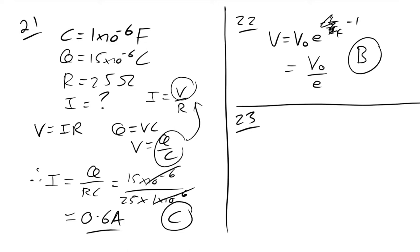Question 23: a coil with current in a magnetic field. Option A says no magnetic forces on SP and QR — that's false, one goes up and the other down out of the page. Option B says no magnetic forces on PQ and RS — that's correct because the current is parallel to the field in those segments, so there's no force. The answer is B.